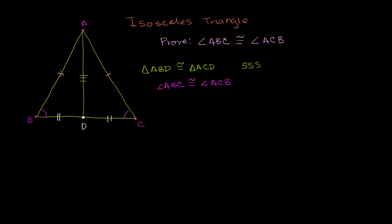That's a pretty neat result: if you have an isosceles triangle — a triangle where two sides are congruent — then the base angles are also going to be congruent. Now let's think about it the other way. Can we make the converse statement? If the base angles are congruent, do we know that the two legs are going to be congruent?